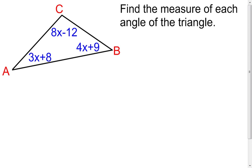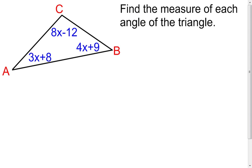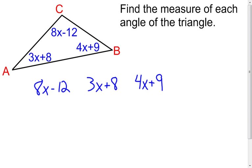Let's go on to the next example. Here, again, I want to find the measure of all three angles in the triangle. The problem gives me the measure of all three angles in terms of x. Using the triangle angle sum theorem — which says the three angle measures add up to 180 degrees — I'm going to add angle C, angle A, and angle B together and set them equal to 180 degrees.